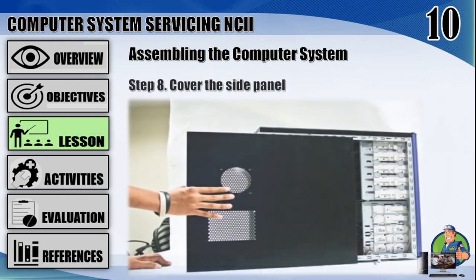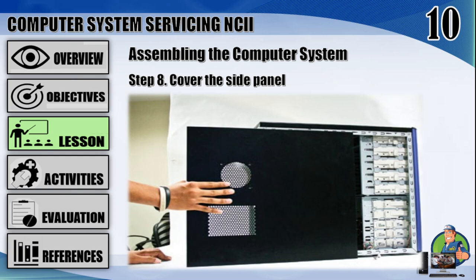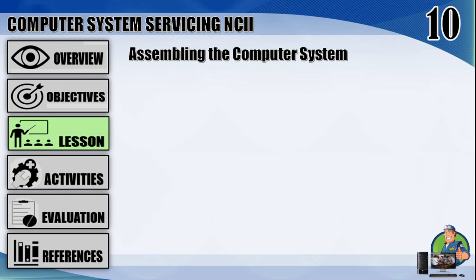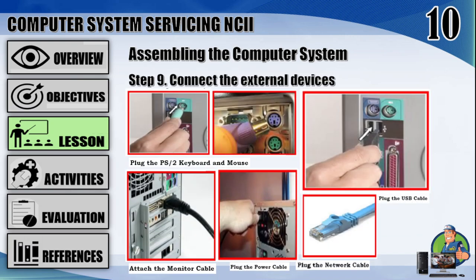Step 8: cover the side panel — cover the tower by placing it and pressing towards the front side and screw it. Step 9: connect the external devices — connect the external devices with the CPU at their appropriate sockets. This includes mouse and keyboard at PS/2 or USB connectors, and monitor at the video output socket. Connect the power cables to the back of the power supply. Plug in the power cables to the electric board.